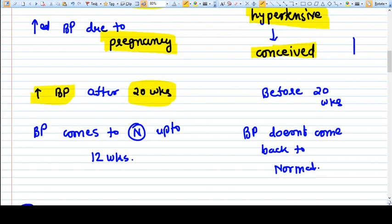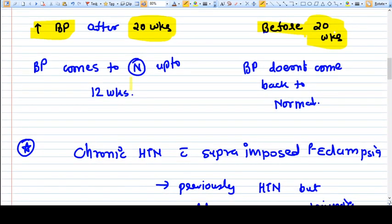If the BP increases after 20 weeks during pregnancy when before it was normal, we term it as PIH. If the BP was already high before 20 weeks, we term it as chronic hypertension of pregnancy. When pregnancy ends, the BP will come to normal within 12 weeks in case of PIH.